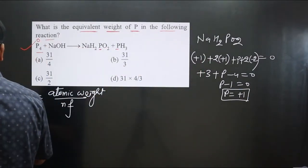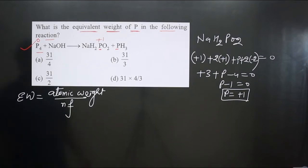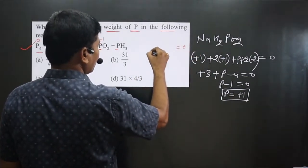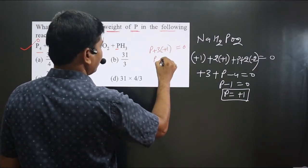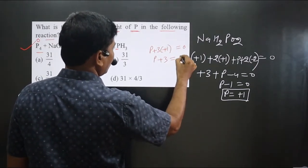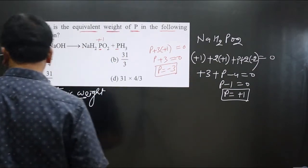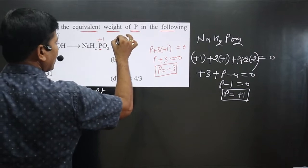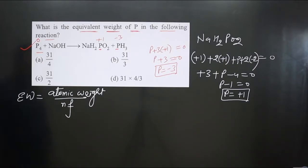For phosphine (PH₃), the neutral molecule equals zero. Phosphorus plus three hydrogens, each hydrogen at +1: P + 3 = 0, so phosphorus = −3. Phosphorus is present in the −3 oxidation state in phosphine.